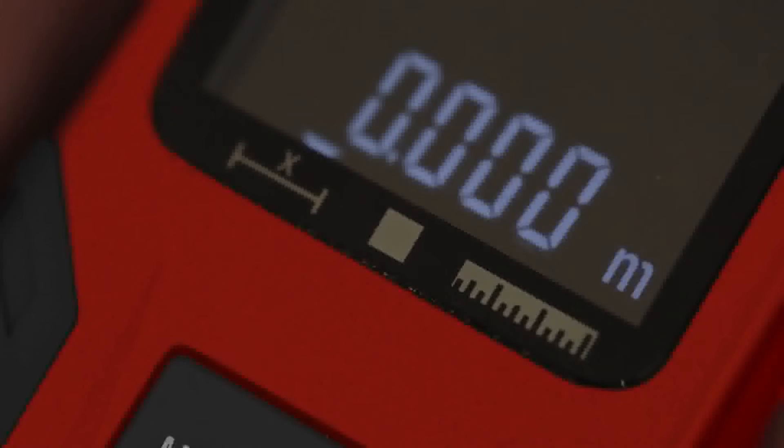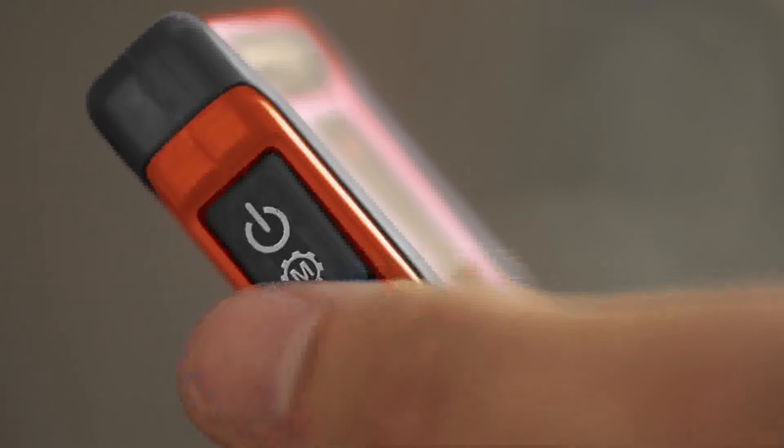As you look at the display, you'll notice that the device has three settings: Distance, Area, and Continuous. To change, simply press the power button and the arrow will move to the next setting.